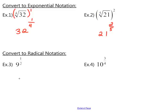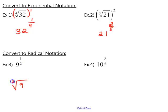In examples 3 and 4 we go the other route, converting exponential notation into radical notation. Take the base and put it underneath the radical. The denominator of the exponent is the index and the numerator is the power the term is raised to. We normally don't write an index of 2 or an exponent of 1, so the answer is simply the square root of 9.